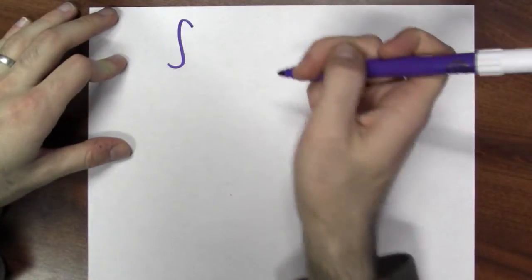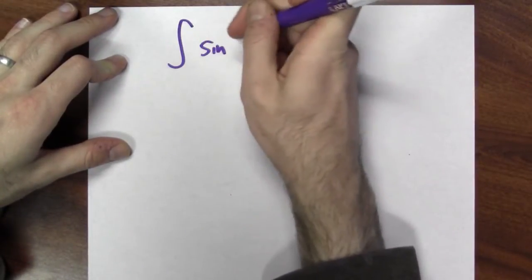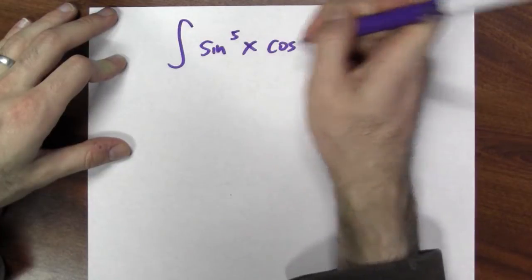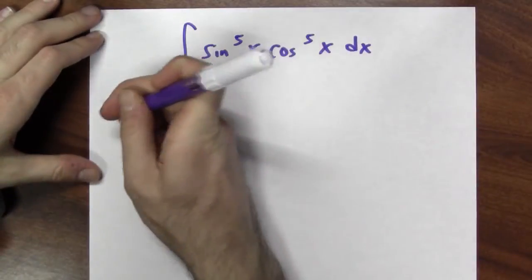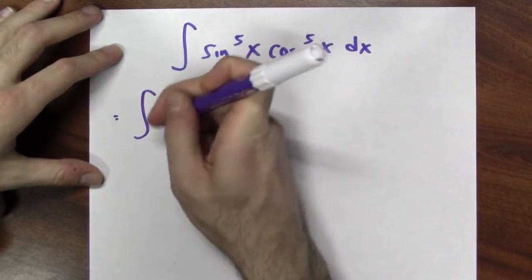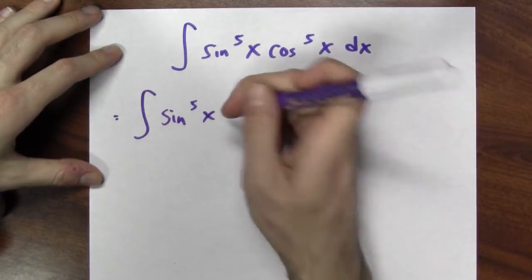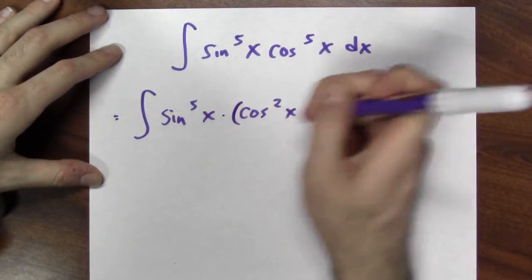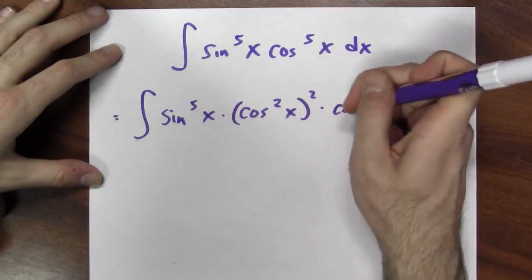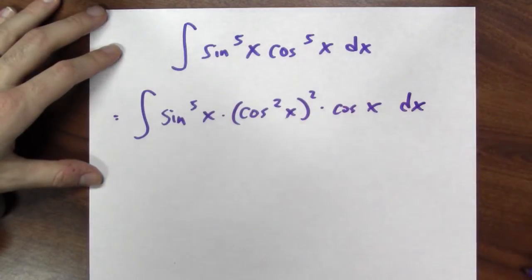For example, what if I wanted to anti-differentiate sine to the 5th power times cosine to the 5th power. Since I've got an odd number of cosines, I can trade all but one of them for sines. What I mean is I can rewrite this integral as sine to the 5th times cosine squared squared times cosine of x dx.